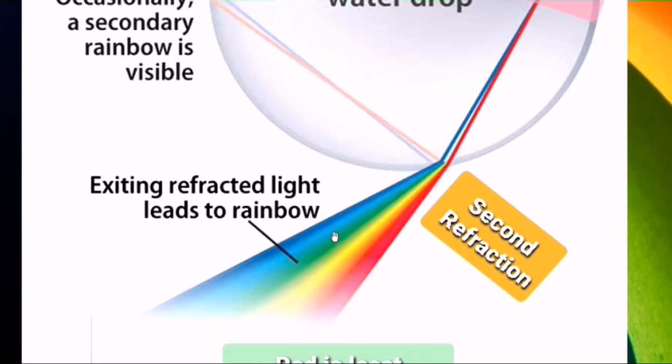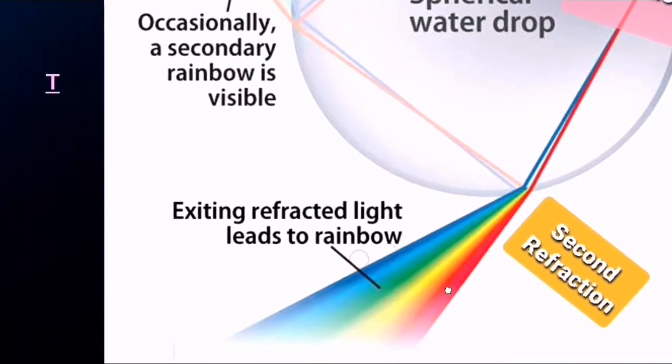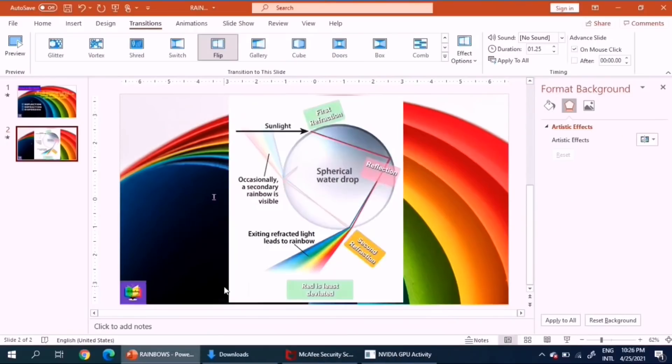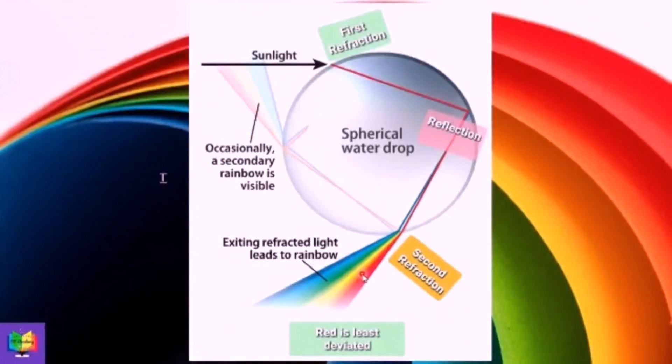In common language we say ROYGBIV: violet, indigo, blue, green, yellow, orange, and red. So red is deviated the least and the violet color is deviated the most.